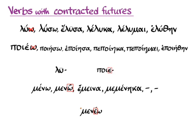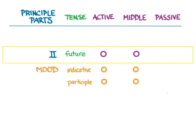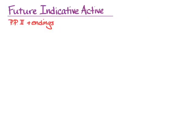All you need to do is remember all your rules for epsilon contract verbs. With future contracts we're really only looking at the things we have to do with the second principal part. Right now those things are only the indicative future active and middle, and the participle future active and middle. Remember, everything you do for the future passive comes from the sixth principal part, so we don't have to worry about that with a strange second principal part. We only need to work on the active and the middle of the indicative and the participle.